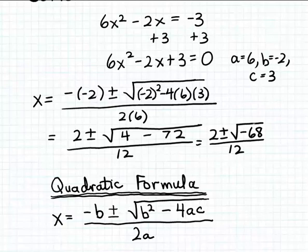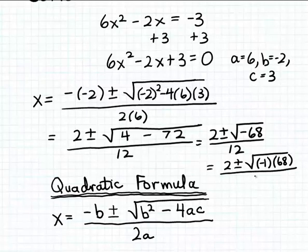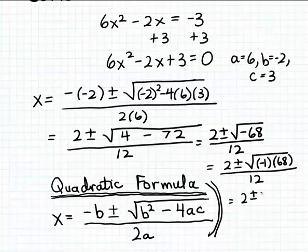Now let's go ahead and simplify these two solutions as far as we can by hand. First, I'm going to take the minus 68 and rewrite that as a product: minus 1 times positive 68. The reason is to show that the solutions are complex — we can extract the square root of minus 1. We know that the square root of minus 1 is the imaginary number i. So we have 2 plus or minus i times the square root of 68, over 12.